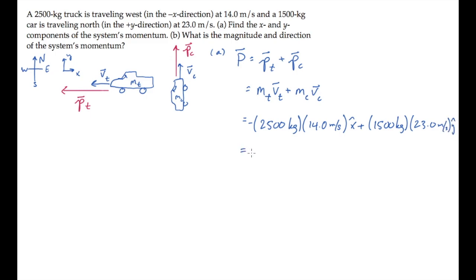When you calculate this, you find the x component is negative 3.50 times 10 to the 4th x-hat, and the y component is 3.45 times 10 to the 4th y-hat, kilogram meter per second. And I'll just write those results over here, so that we'll have them when we solve Part B.